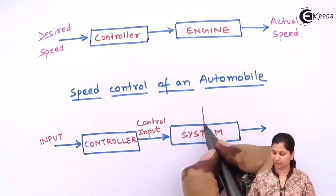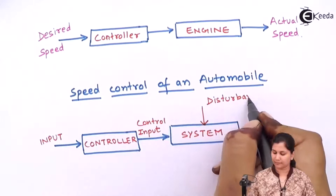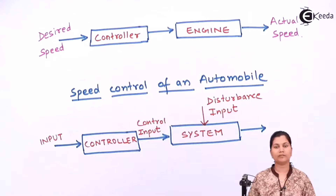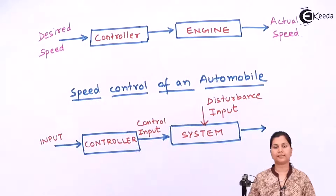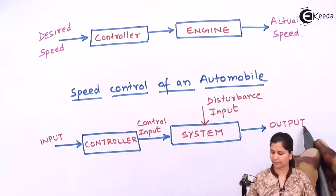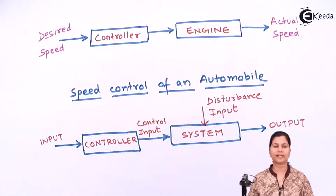So we have a disturbance input acting on the system. The signal coming out of the system is called the output of the system. This is the way in which we can represent a generalized open loop control system.